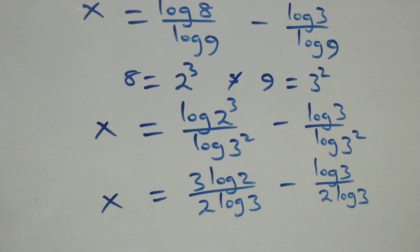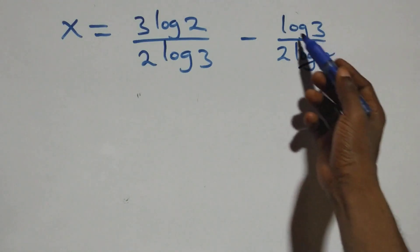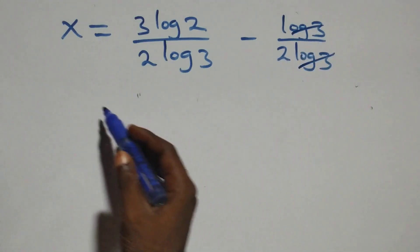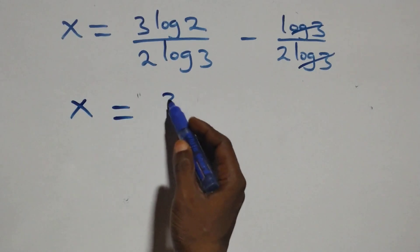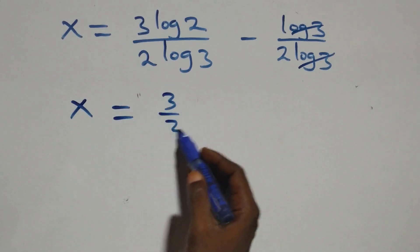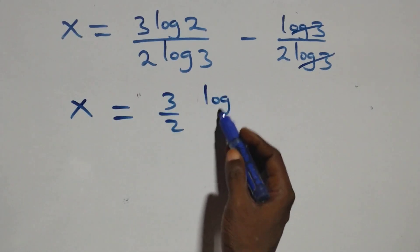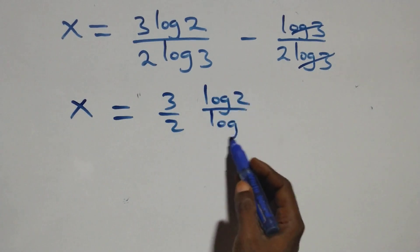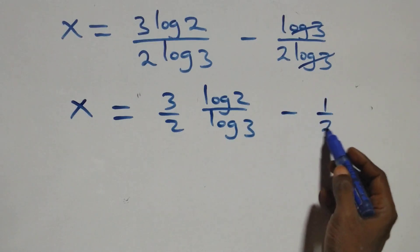The log threes cancel each other in the denominator of the second fraction, leaving one over two. So we have x equals three over two times log two over log three, minus one over two.